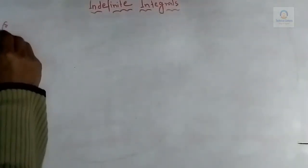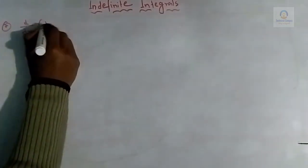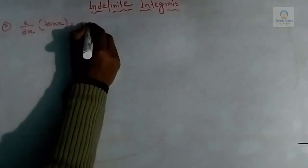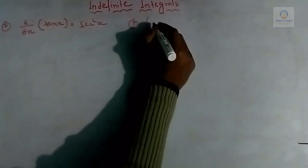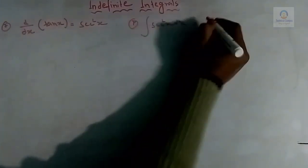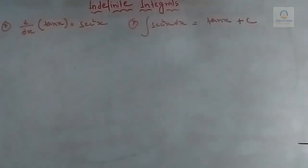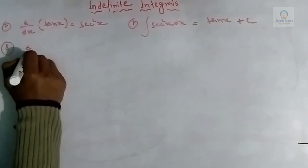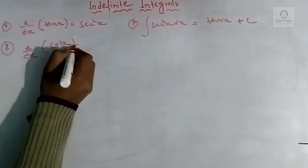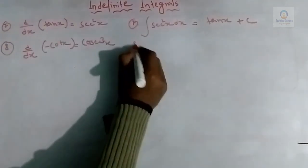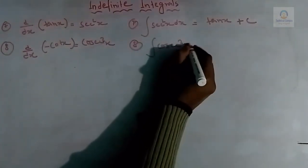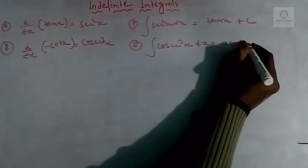Please try to remember all these formulas, because if you remember them integration will become very easy. These were covered in class 11 or 12, so just revise them. The seventh formula: d/dx of tan x = sec²x, so integration of sec²x dx = tan x + C. The eighth formula: d/dx of (−cot x) = cosec²x, so integration of cosec²x dx = −cot x + C.